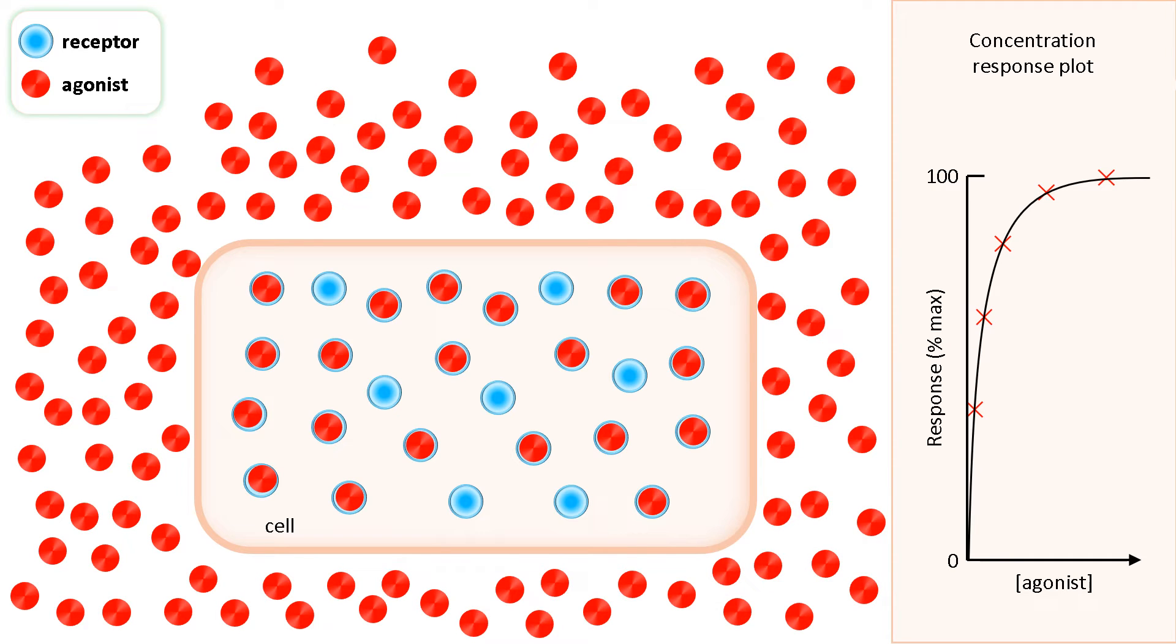When we double the concentration of agonist again, all the receptors become bound. But plotting the response on the graph, you can see that it is no larger than at the lower agonist concentration when the receptors were not fully occupied. So you don't always need 100% of receptors to be bound with agonist to produce the maximum response. There may be a proportion of the receptors that are extra to requirement. These receptors are known as spare receptors.